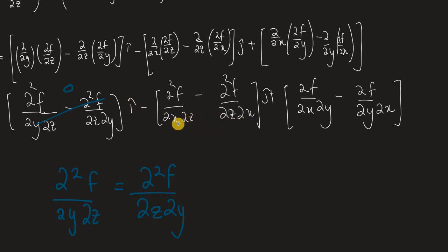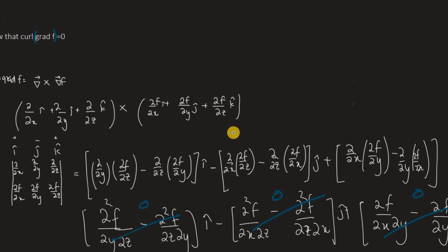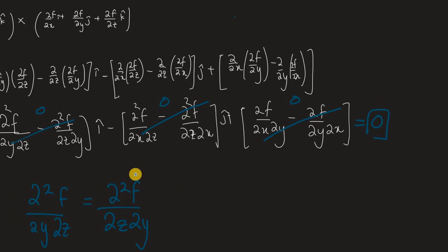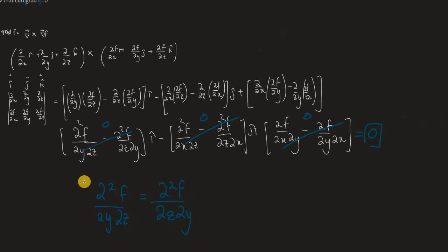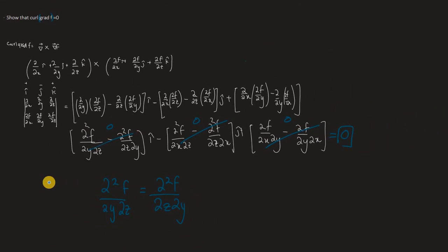Similarly, for the j-hat term, ∂²f/∂x∂z equals ∂²f/∂z∂x, so that is also 0. And the k-hat term, ∂²f/∂x∂y equals ∂²f/∂y∂x, also 0. Hence it is proven that curl of grad f is equal to 0. Don't forget to subscribe, like, share, and comment. Thanks for watching!